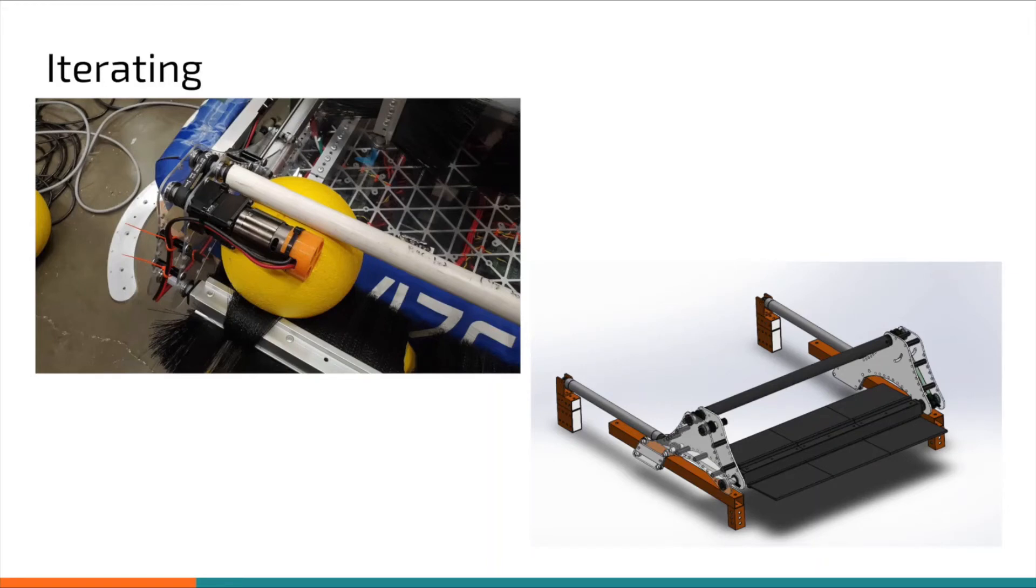We also had 3/4 inch bore, 12 inch stroke pneumatics to extend and stow the intake and to also prevent stray balls from entering or exiting the robot. However, we did feel that we could further improve this by adding guiding panels in future versions.